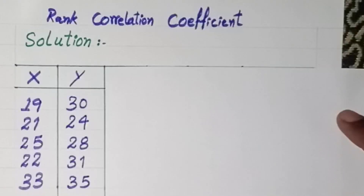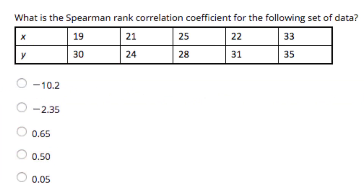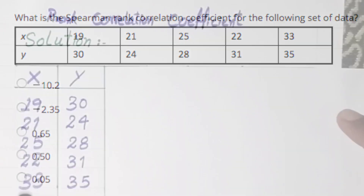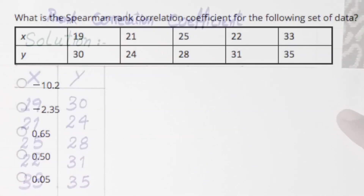Bismillahirrahmanirrahim. Dear friends, assalamualaikum. I hope all of you are very well. Today we will learn the rank correlation calculation. It is very easy — not a difficult concept. Just within four to five minutes we can calculate the rank correlation value. Here, two columns are given to us: x column and y column. On the basis of this data we will calculate the rank correlation value.